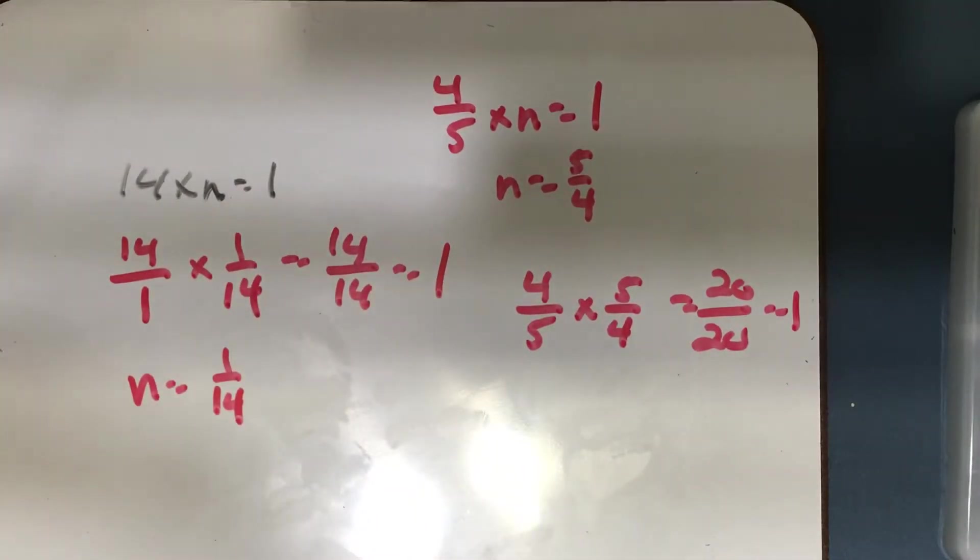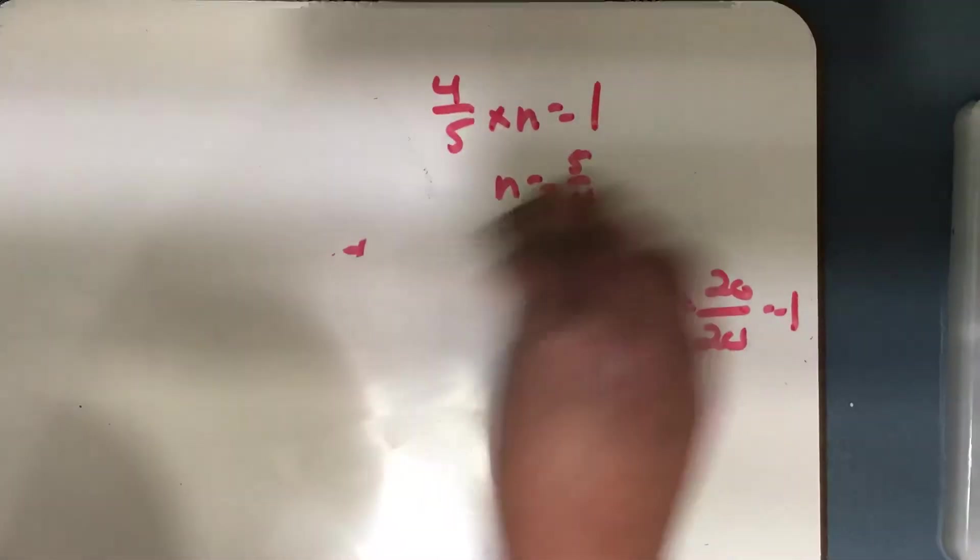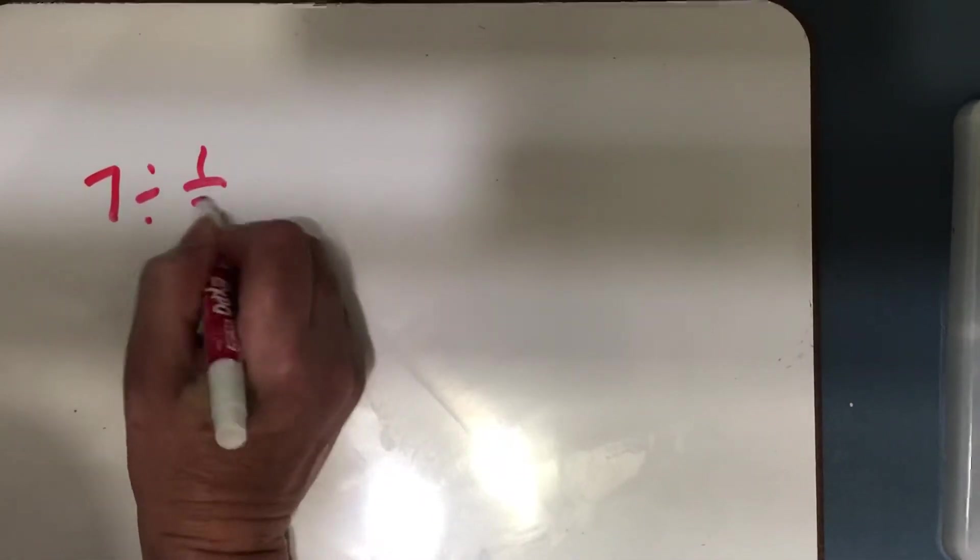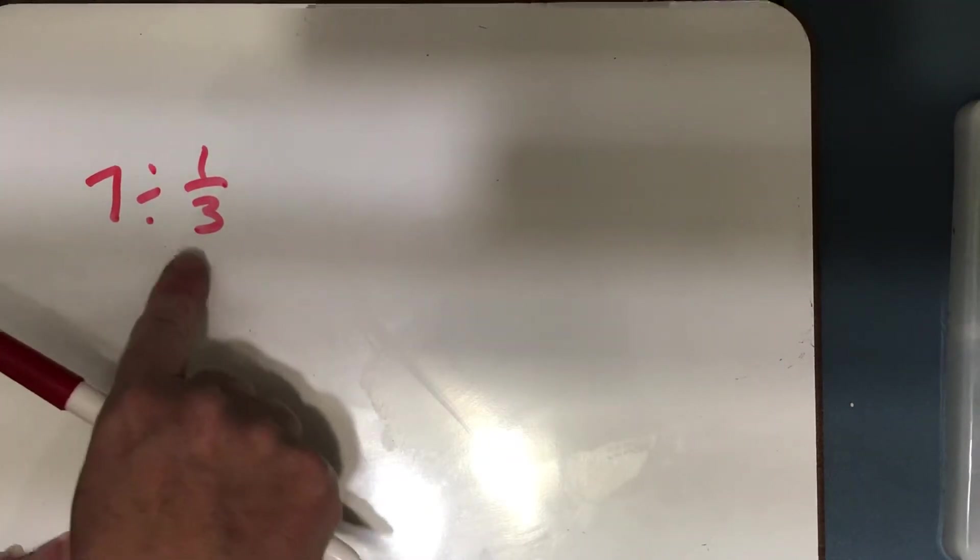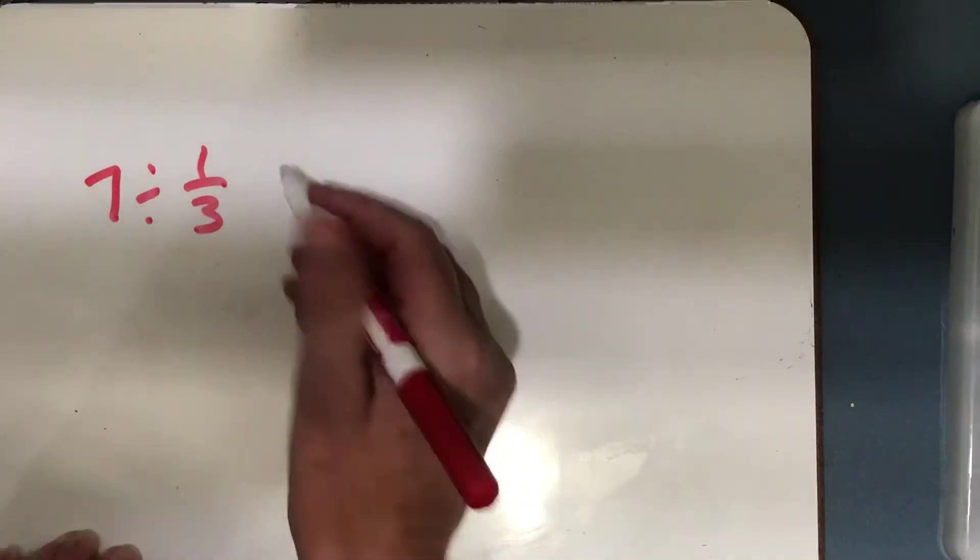Okay, and the next part is dividing. So let me look at number 29. 29 says 7 divided by 1/3. Remember that when you divide a whole number by a unit fraction, you really just multiply your whole number times your denominator, which would equal 21.